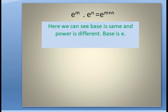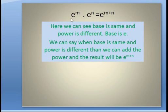Here we can see the base is the same and the power is different. Base is e, and m and n are the powers. So from this property we can say: when the base is same and power is different, we can add the powers, and the result will be e to the power m plus n. Base will remain common.